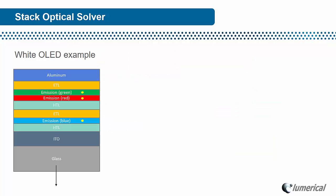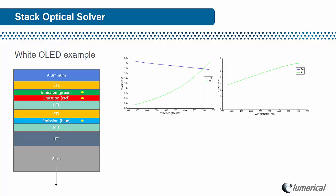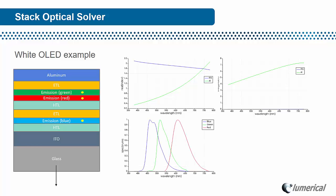This is an example of a white OLED, where the structure is shown here. A dipole emitter is placed in each of the green, red, and blue emission layers. To study the broadband response of this OLED, we have to enter the real and imaginary part of the refractive index as a function of wavelength for the dispersive materials. We also have to enter the dipole spectrum for each color, and once we do that, we can get the overall emission of the device using the Stack Solver.